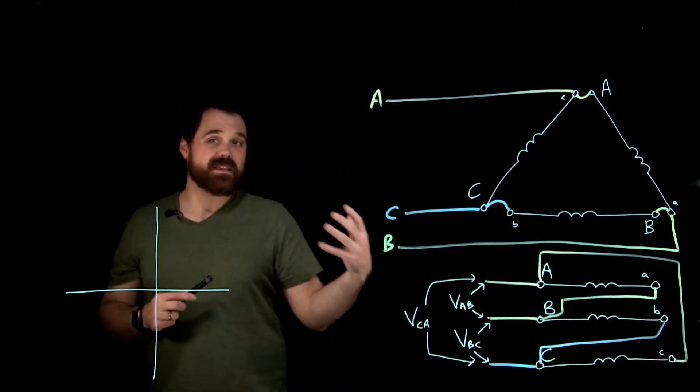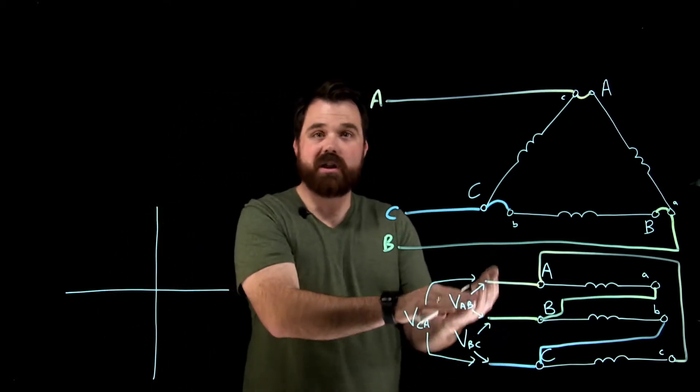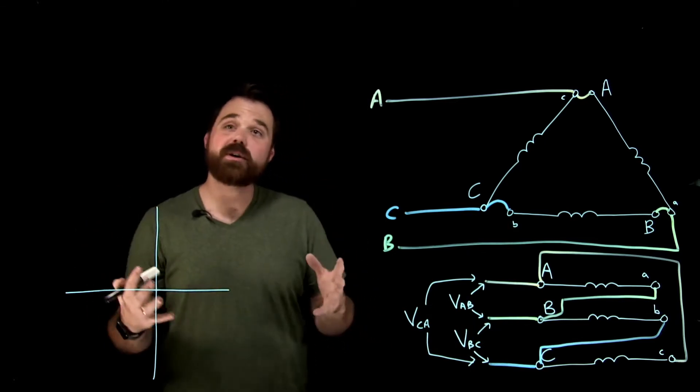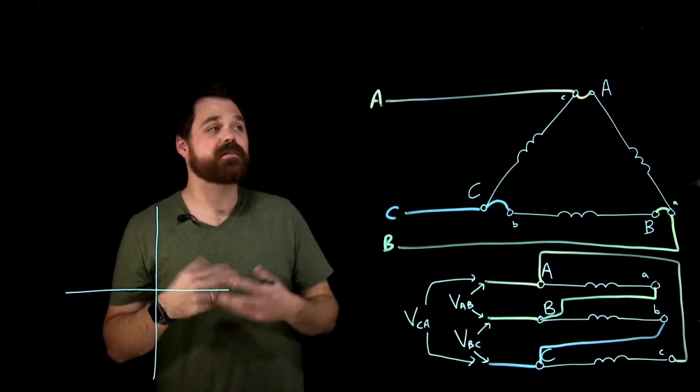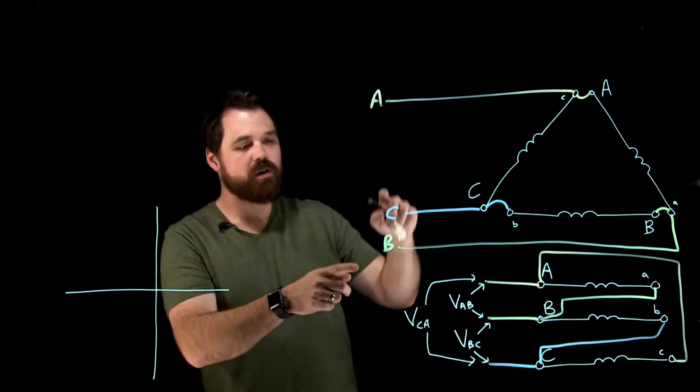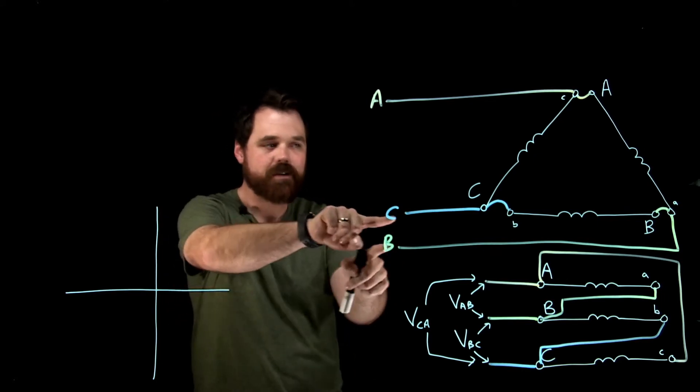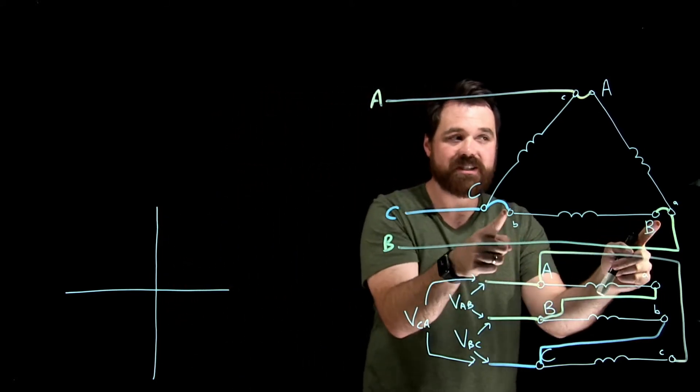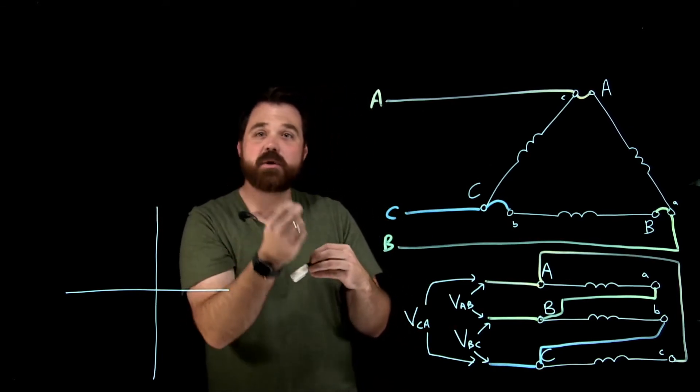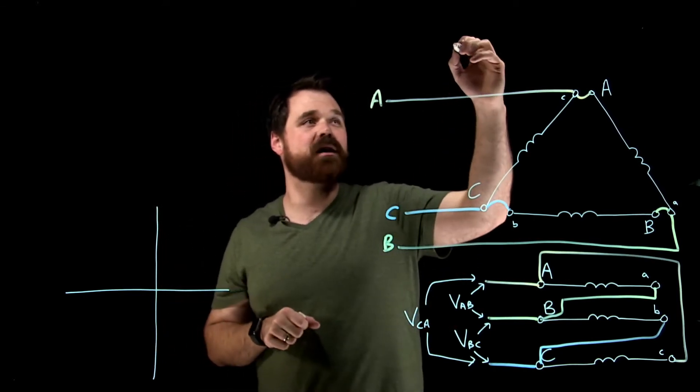Now, those would be my line voltages because I'm measuring on the line conductors. A really cool thing, or an interesting thing with delta is whether I'm measuring out here B to C, or whether I'm measuring here B to C at the phase, my line voltages equal my phase voltages. So that's a big thing.